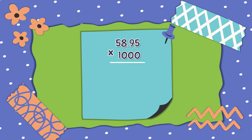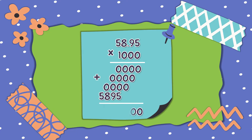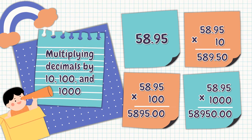This time, let us multiply 58 and 95 hundredths by 1,000. The answer is 58,950. Don't forget to look at the similarities. Okay, now we are done multiplying 58 and 95 hundredths by 10, by 100, and by 1,000.